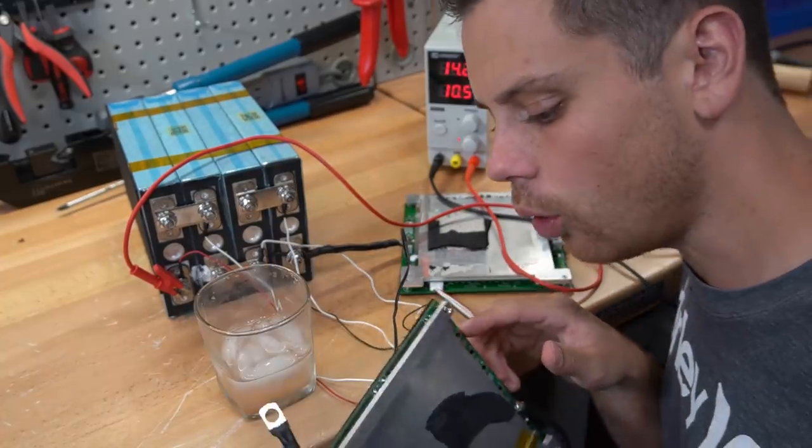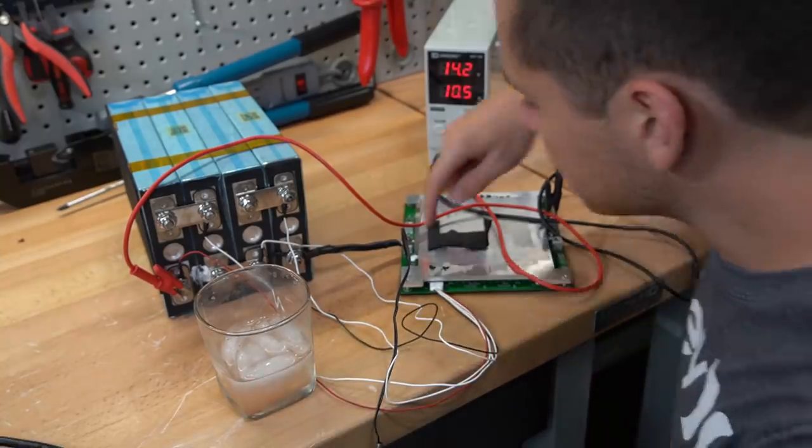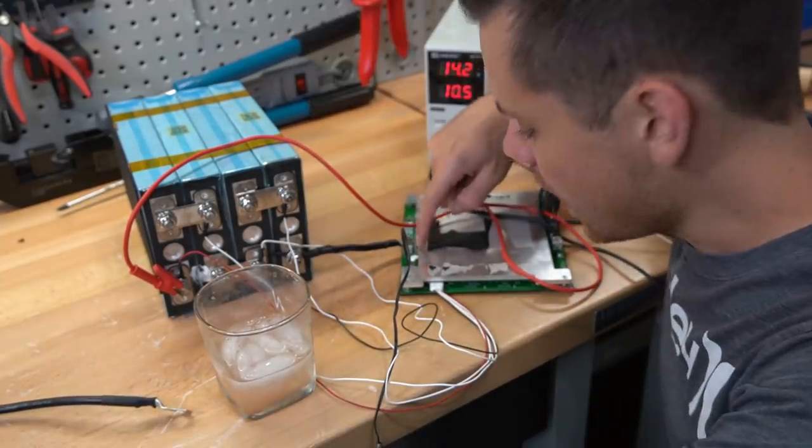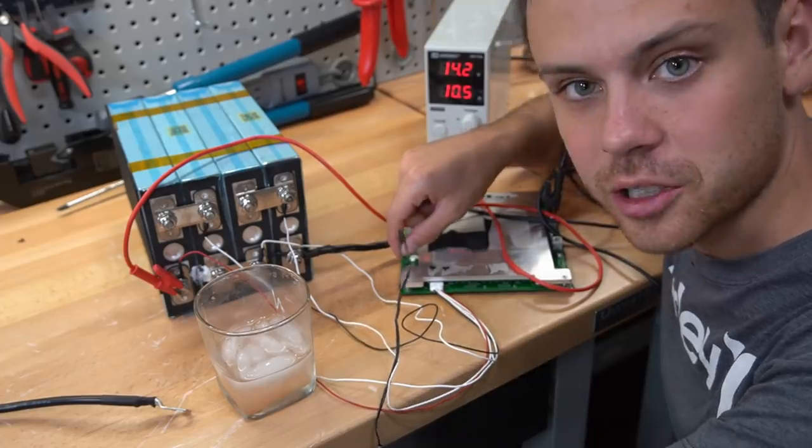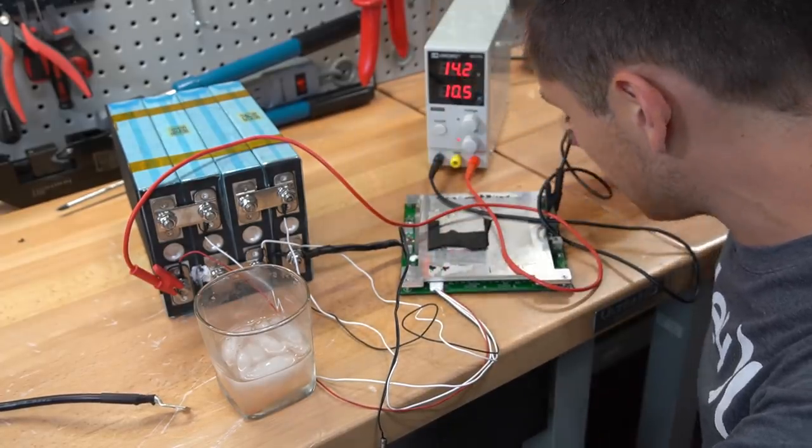I also noticed on the old BMS they didn't have the leads glued down. Even the high temperature sensor for the FETs has glue, and on the temperature sensor lead and on the balance plug. So they did upgrade some of that as well.